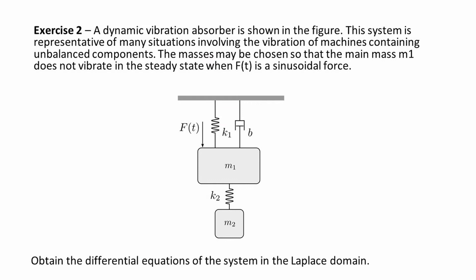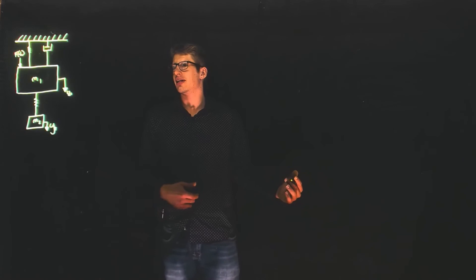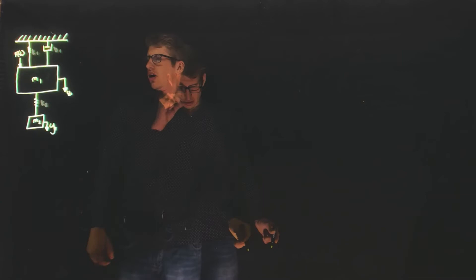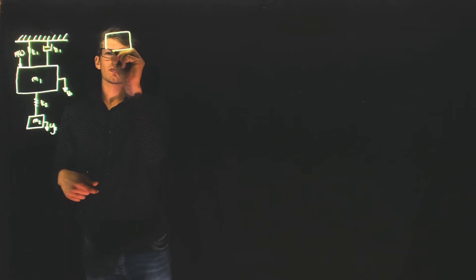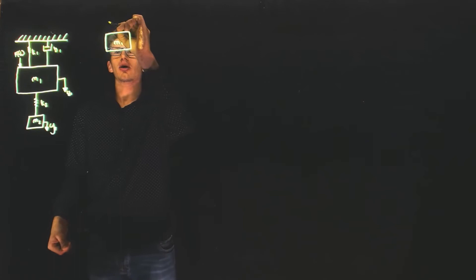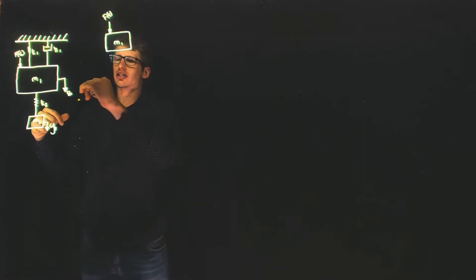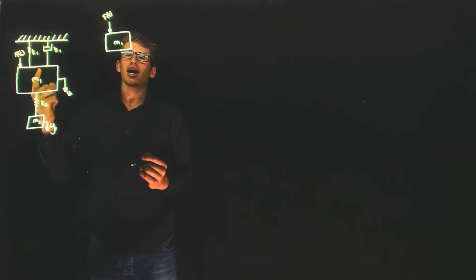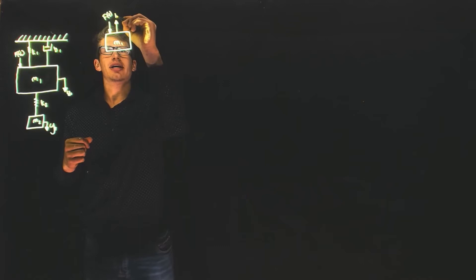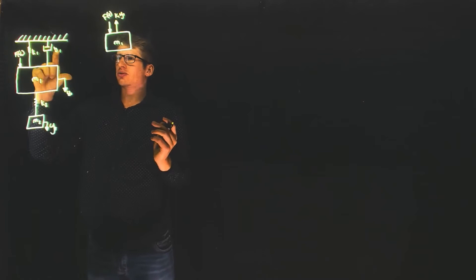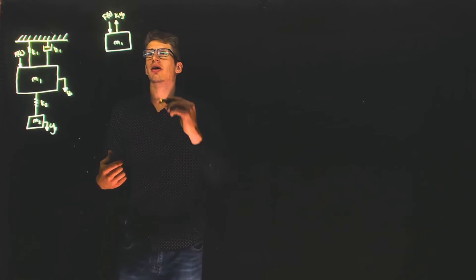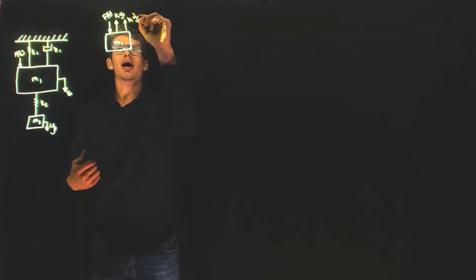Now we're moving on to problem 2. We have a mechanical system with two masses, and again we're going to create the differential equations and then convert to Laplace domain, separating them into Y1 and Y2. Looking at mass number 1 and the forces applied to it: we have our applied force F(t), plus the forces from springs and dampers. For K1, displacement of Y1 downward results in a force up on mass 1 due to spring K1, equal to K1 times Y1. The damper creates a force with respect to velocity, so B1 times Y1 prime.